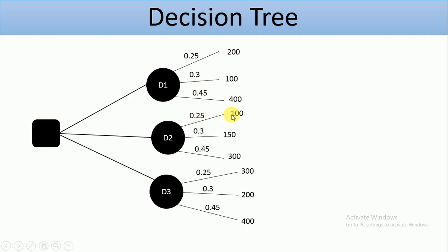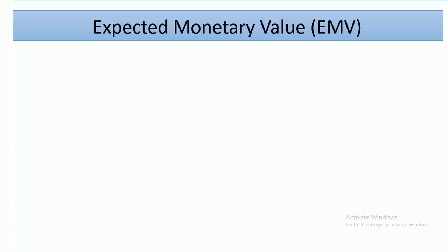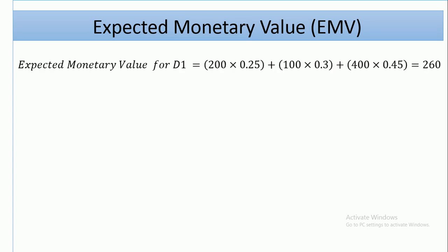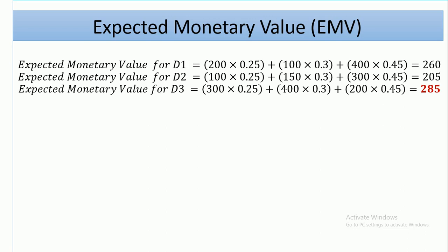When you also go to the expected monetary value for D3, you have 0.25 times 300, plus 0.3 times 200, plus 0.45 times 400. And that makes it very easy to compute, unlike when you are computing directly from the table. And from that, we have the computation here. So the expected monetary value for D1 gives 260, for D2 gives 205, and for D3 gives 285.